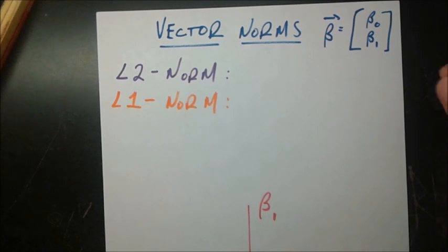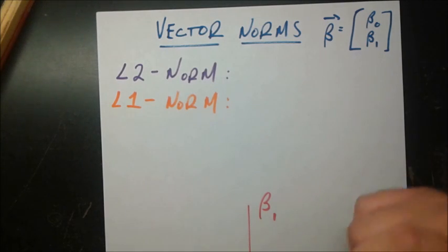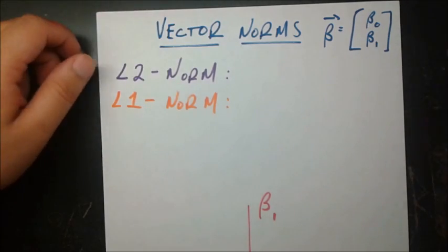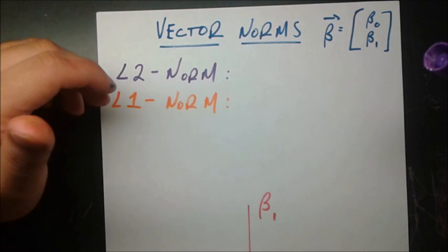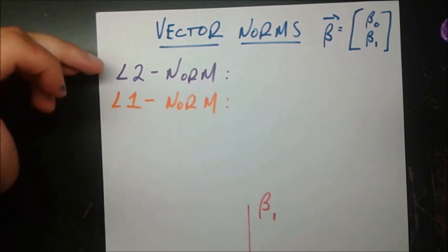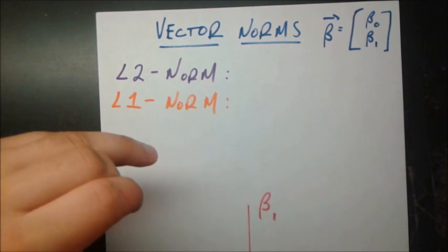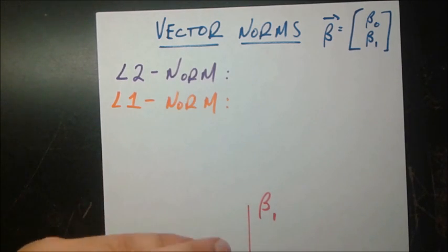In this video, we'll be talking about different kinds of vector norms. What I mean by vector norms is different ways to measure the magnitude of vectors. Now you're probably thinking, well, I already know how to measure the magnitude of a vector. But the way you know it is probably the L2 norm, which is the way that's most commonly taught and used very frequently. But there's also something called the L1 norm, which is not used as frequently, but it's also worth mentioning.